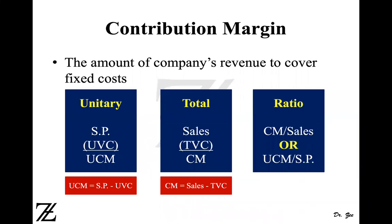So what is contribution margin? Contribution margin is the amount of revenue that a company has to cover its fixed costs. After paying for variable costs, whatever is left is your contribution margin. In unitary form, you can subtract unit variable cost from selling price to get contribution margin per unit, also known as unit contribution margin.